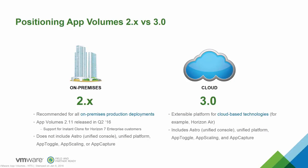Customers should continue to use App Volumes 2.x as the recommended platform for all on-premise production deployments. We introduced App Volumes 2.1.1 to our Horizon 7 customers specifically. This new release includes support for instant clones and ensures that all Horizon 7 Enterprise customers can create and personalize desktops in seconds. App Volumes 3.0 is a new extensible application and user management platform optimized for cloud-based deployments such as VMware Horizon Air. We'll continue to develop both App Volumes 2.x and 3.x and look forward to bringing these together into a single platform in future releases.